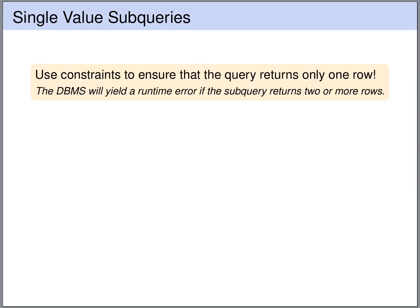So in order to avoid that the database management system will give errors at runtime, you should really make sure that the single value subqueries really return at most one row. And in order to ensure this, you should use integrity constraints like we've just argued. We've argued that homework one is a key, therefore there can be only one row returned.